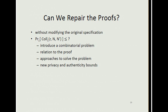I'd like to see if we can repair the proofs without modifying the original specification. For this we need to derive an upper bound on the probability of a counter collision. I will introduce a combinatorial problem, discuss its relation to the proofs and approaches to solve it, and then present our new privacy and authenticity bounds.